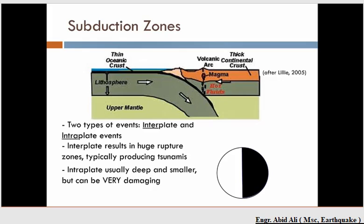The oceanic crust is getting bent, stressed, pulled, and all sorts of strain is occurring. As that crust is being recycled back into the mantle, it's not going to go quietly. That bending can cause cracking inside the oceanic crust as it bends and gets pulled beneath the continental crust and back into the mantle. Those earthquakes that occur inside the subducted crust are what we call intraplate events — intra meaning inside the plate.